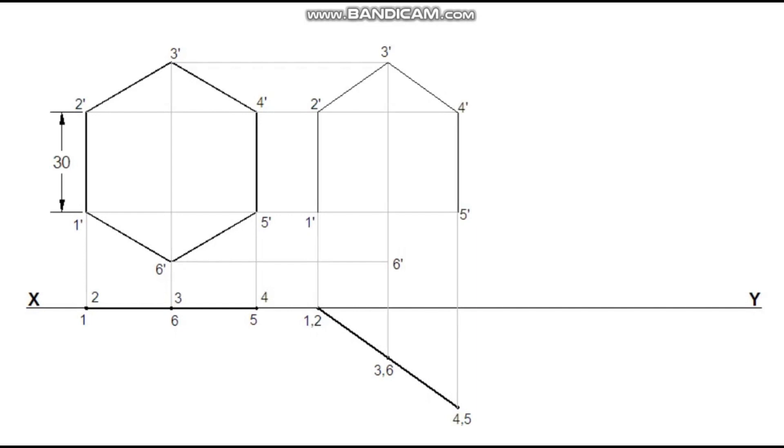One edge of the lamina is inclined 40 degrees to HP. So for the third stage elevation, the second stage elevation should be tilted for the given angle. Draw a 40 degree line. Mark sides 1-dash and 2-dash of the second stage elevation on this 40 degree line. Reconstruct the third stage elevation with respect to this 40 degree inclined line.